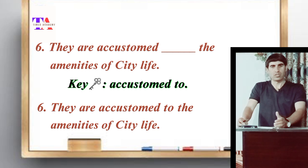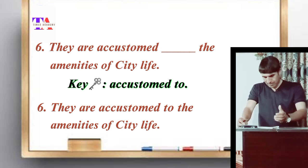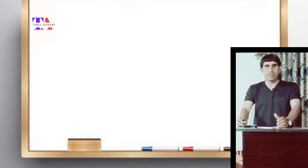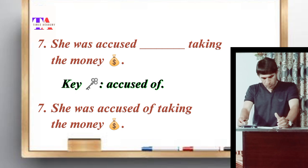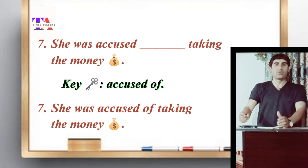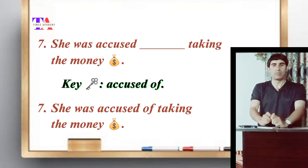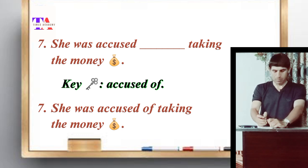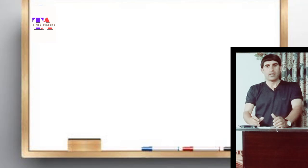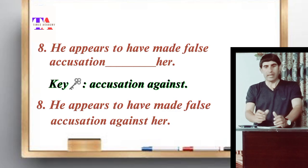Number seven: 'She was accused of taking the money.' The verb 'accuse' takes the preposition 'of', so it becomes: accused of taking the money.